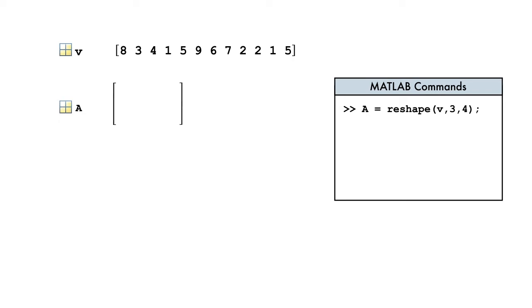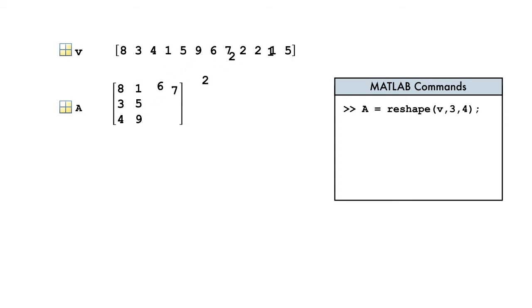The new matrix is filled starting with the first column. Once we have three rows, elements are added to the second column, and so on, until we have a 3 by 4 matrix like we wanted.